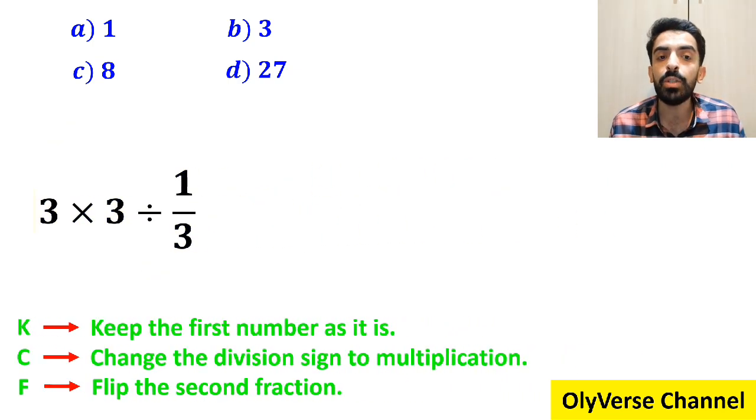In the next step, we do the multiplication between the 3s, which simplifies it to 9 divided by 1 over 3.